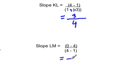For LM, the slope is going to be 0 minus 4, which is negative 4, over 4 minus 1, which is positive 3. And so our slope is negative 4 over 3.